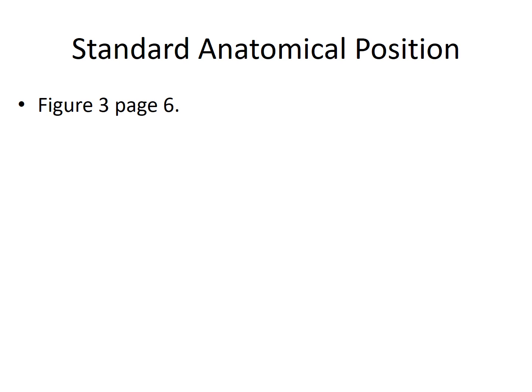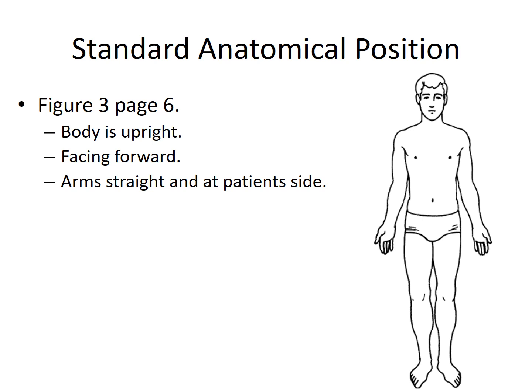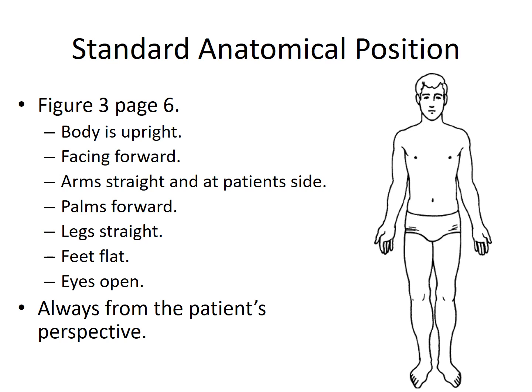When referring to a patient or body parts it can be confusing — for example, is it my left or your left? To standardize that, anatomists use a standard anatomical position, defined in figure three on page six. It is defined as: body is upright, facing forward, arms are straight at the patient's side, palms are forward, legs are straight, feet are flat, and eyes are open.